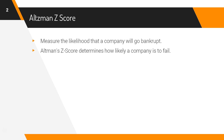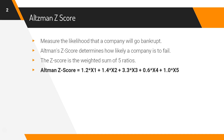The calculation of Altman Z-score is simple and easy, as everything is based on strong data. The Z-score is the weighted sum of 5 ratios. Let's understand all these terms in detail.